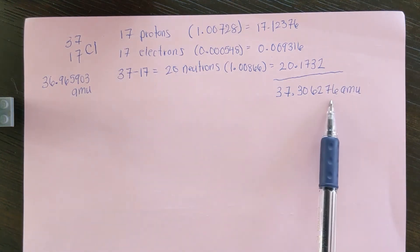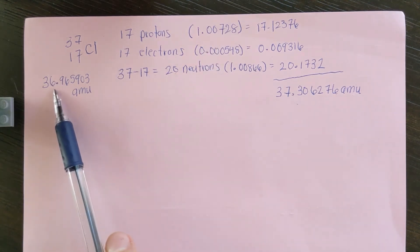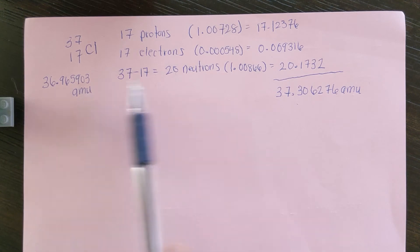So this is the mass of the individual particles. If we look, it's a bit more than what we have here. So the difference in mass between these is what is converted to energy to bind the nucleus of the atom together.